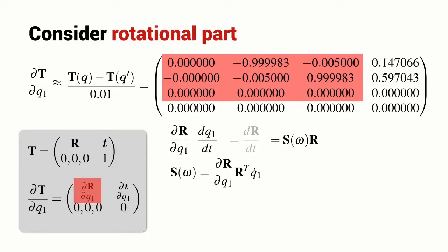We need to compute its inverse, but we know for a rotation matrix that the inverse is the same as its transpose. So now we have the skew symmetric matrix in terms of the derivative of the rotation matrix with respect to Q1, and that's the approximation that we've got highlighted here in red, the rotation matrix transpose and the rate of change of the robot's joint angle.